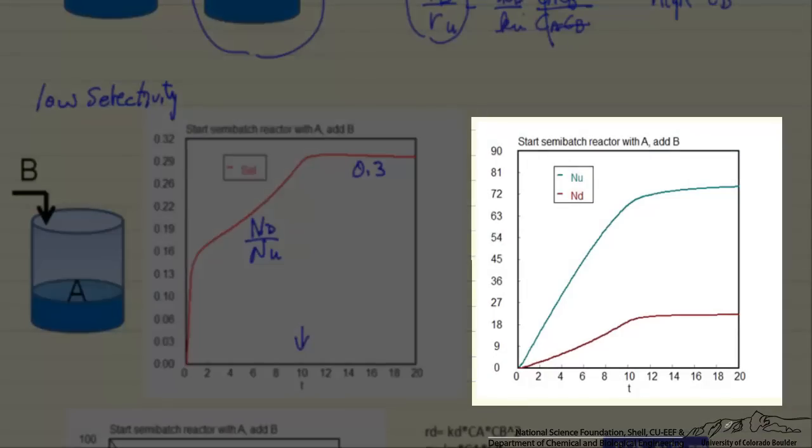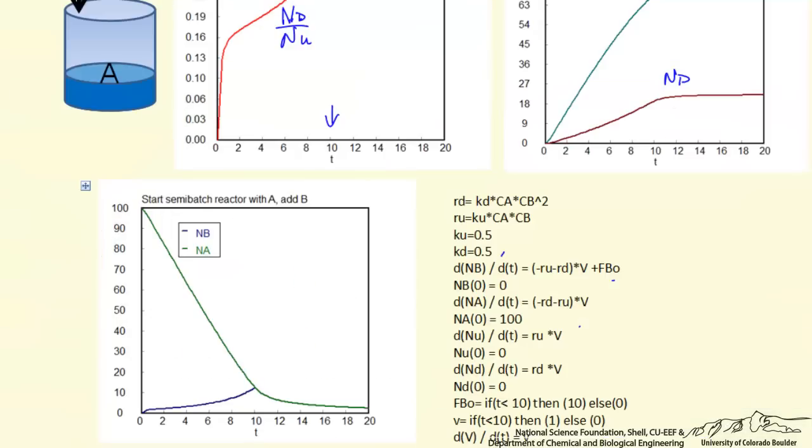This is the plot of the number of moles. So this is the number of moles of the undesired, number of moles desired as a function of time. If we look at the number of moles of A in the reactor as a function of time, number of moles of B, the number of moles of A is decreasing as the reaction is proceeding. We're continuously adding B, but of course that B is reacting.